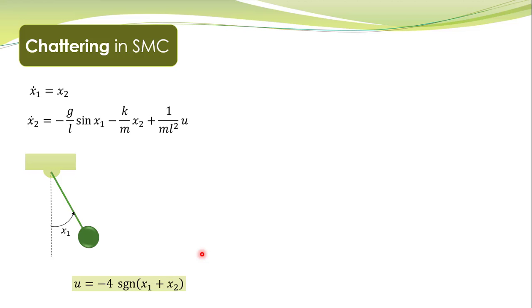One disadvantage of the sliding mode control which we have studied is the chattering effect. Let's further elaborate this chattering effect, and again we use the same example. The control action is shown here — you can see that this is an on-off controller.